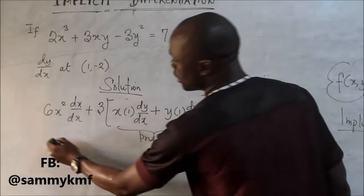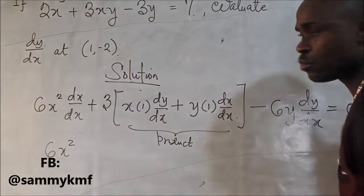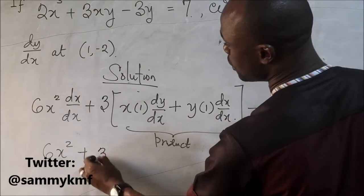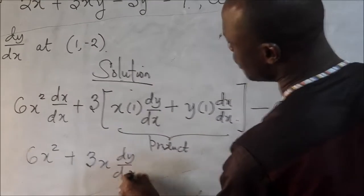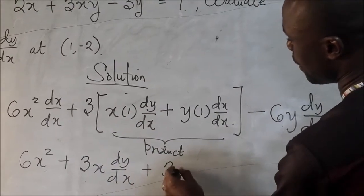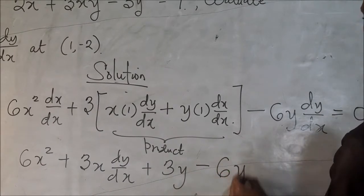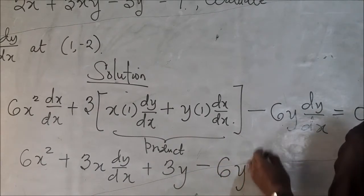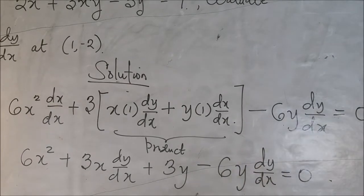So let's simplify this. This is going to give us 6x squared. dx by dx is 1. Plus 3x dy dx. Open the bracket. Plus 3y. Minus 6y dy dx equals to zero.